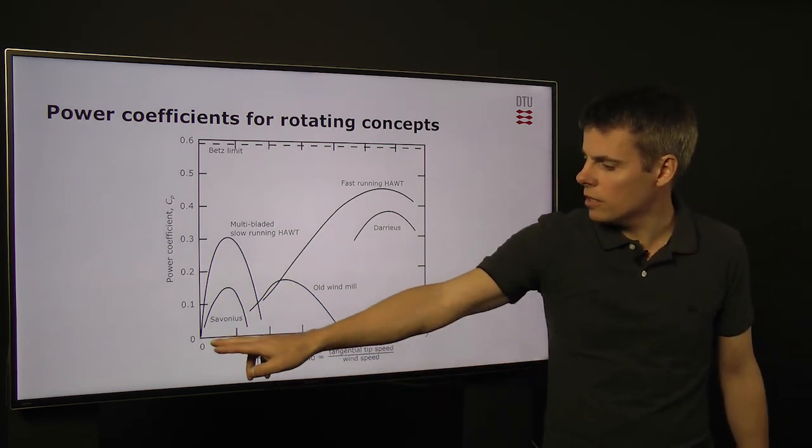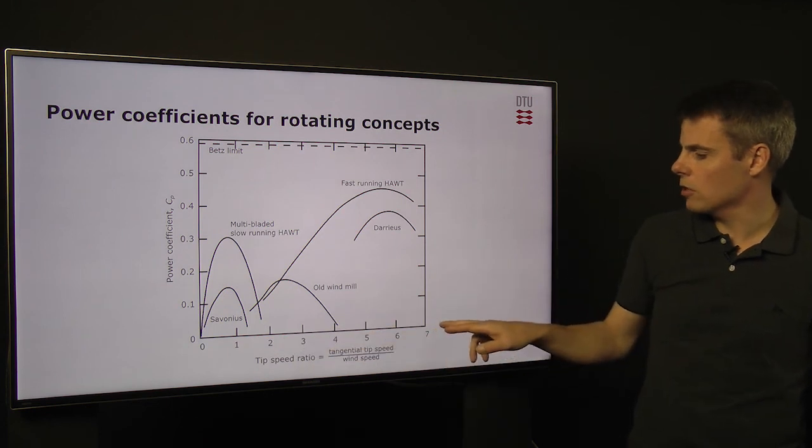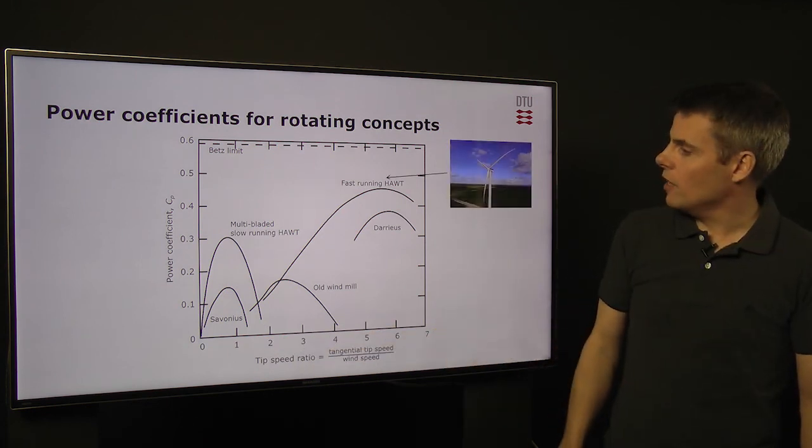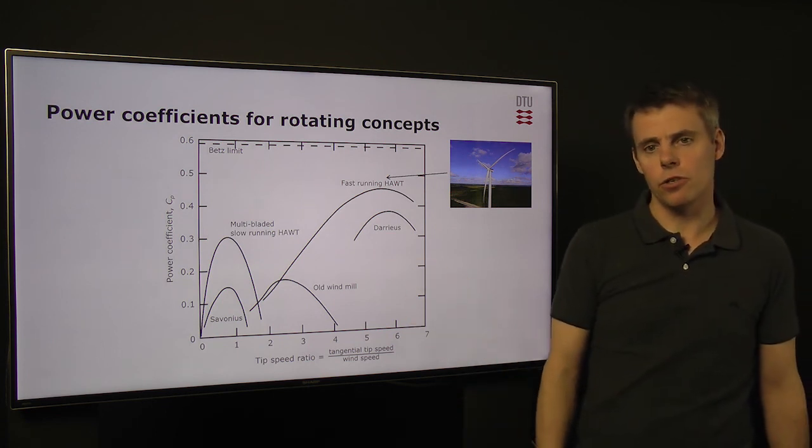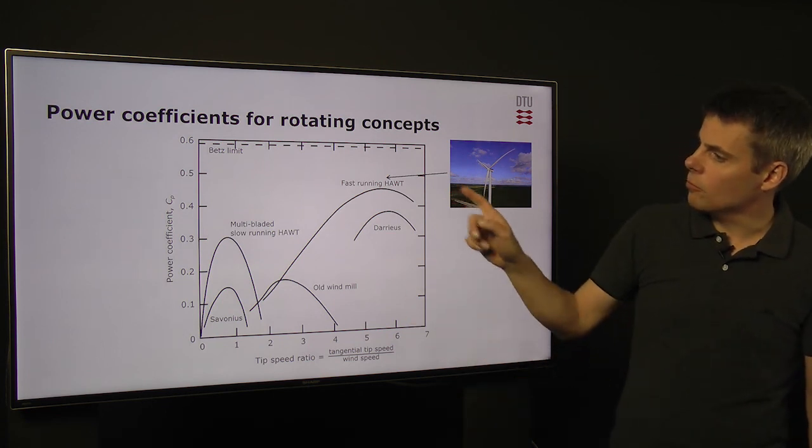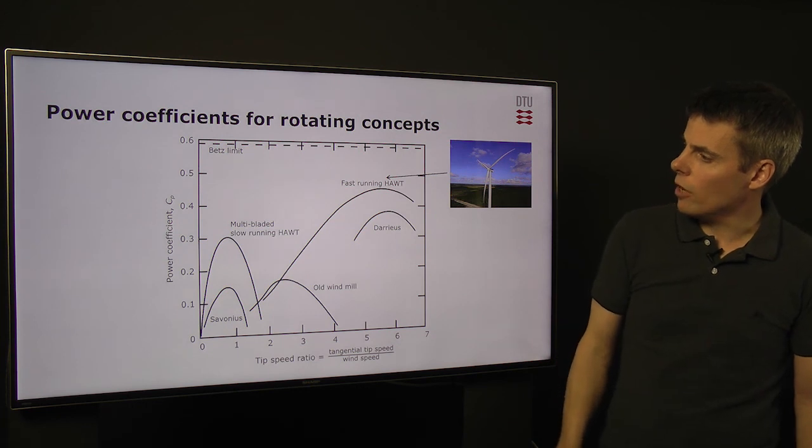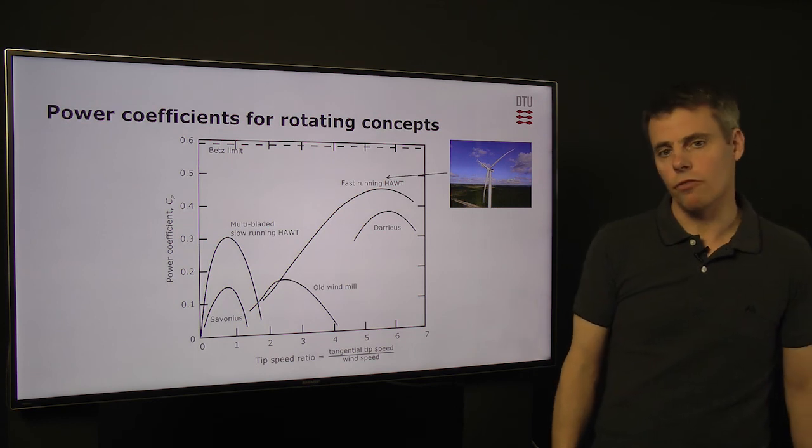You see here that in this case, it goes from 0 to about 7. We have the modern commercial turbine which is running with a quite high tip speed ratio and it can produce quite high power coefficients between 40 and 50%.